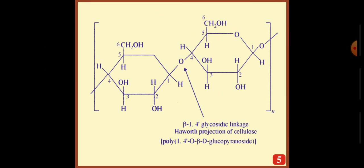This is beta-1,4 glycosidic linkage. This is Haworth's projection formula of cellulose.